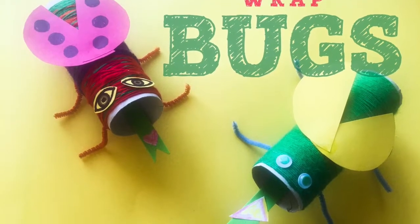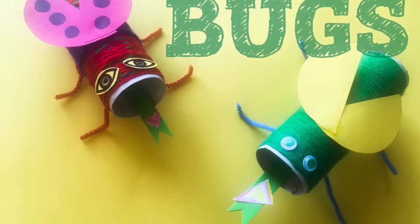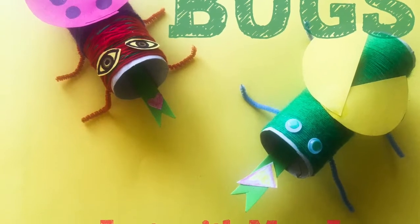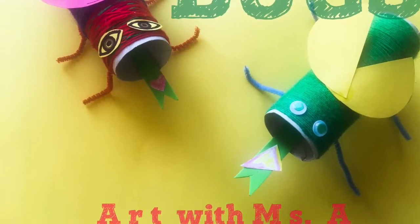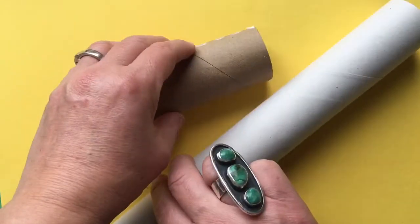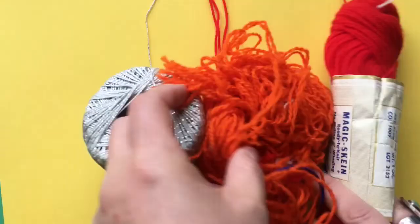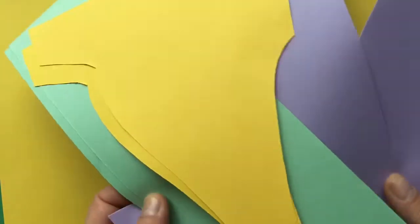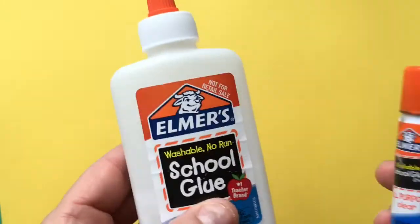This one goes out to my beautiful granddaughter Frankie. We are doing wrap bugs today. Let's gather what we need: paper towel or toilet paper roll, string, pipe cleaners, some scrap paper colored if you have it, some glue white glue and a glue stick, and some scissors.